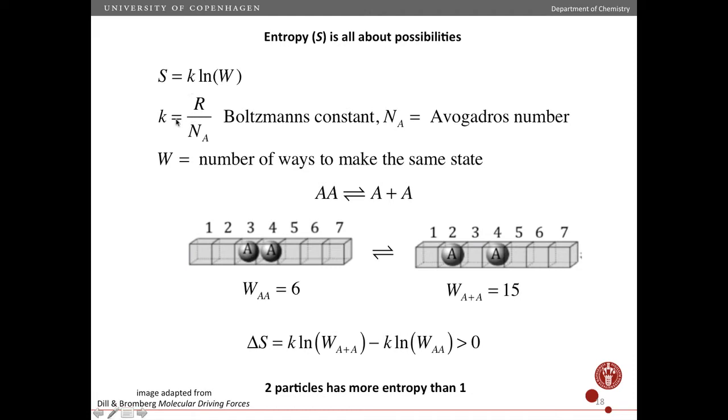So it is the Boltzmann constant k, which is just the gas constant R divided by Avogadro's number NA. So one way to think of it, it's the gas constant per molecule instead of per mole. And then the natural log of W. And W is the multiplicity. It's the number of ways to make the same state.